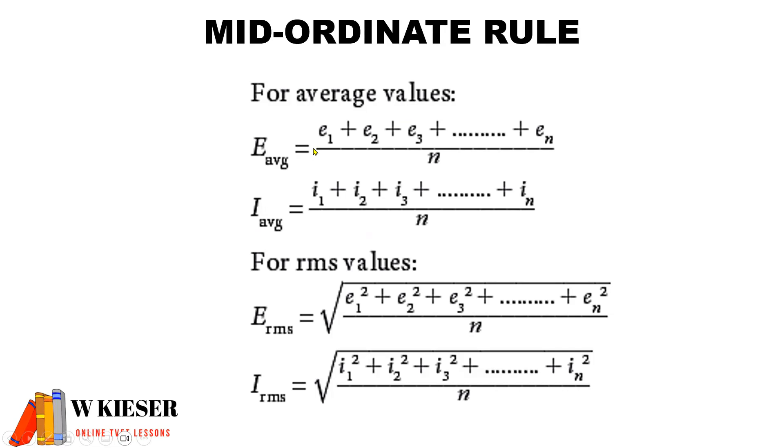For the average value, we have the mid-ordinate values divided by the number of mid-ordinates. For the RMS values, it is the square root of the square of each of the mid-ordinate values divided by the number of mid-ordinate values.